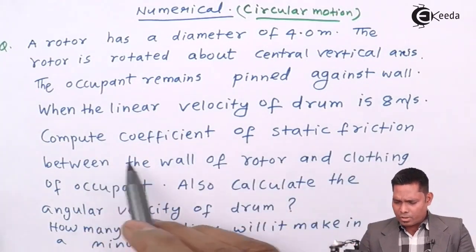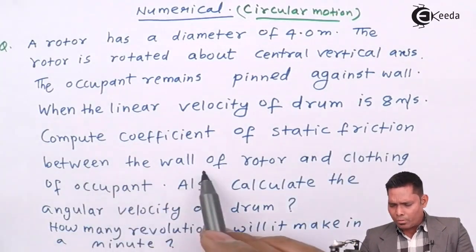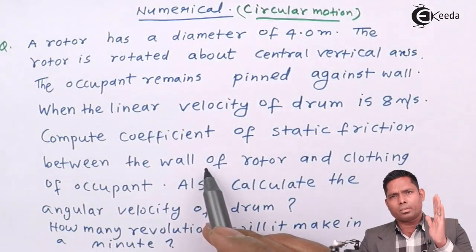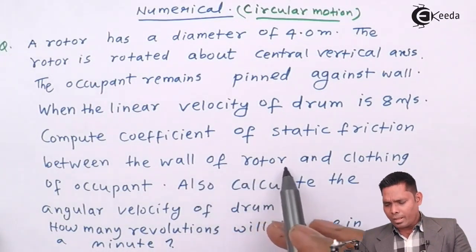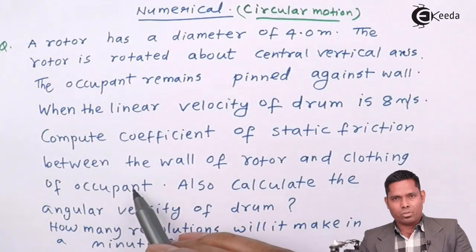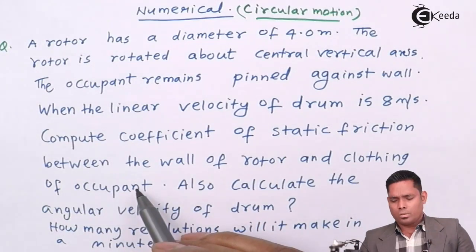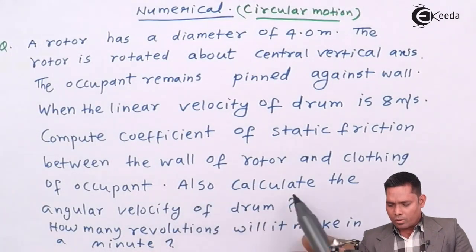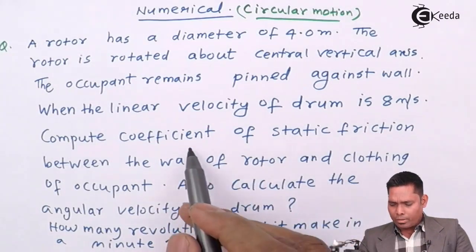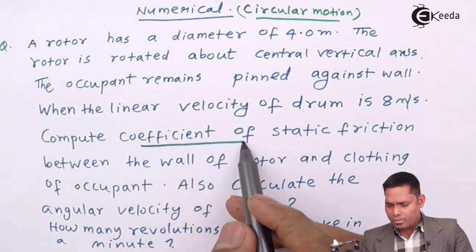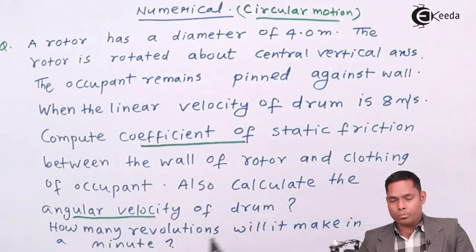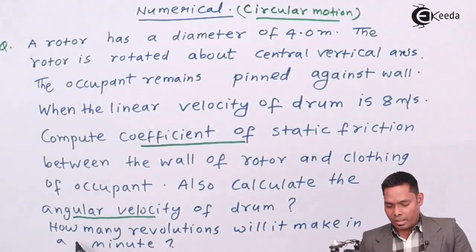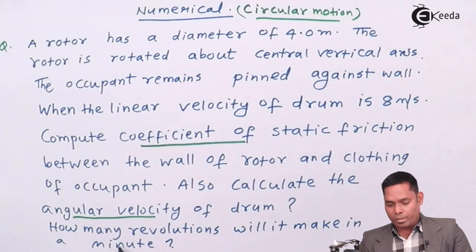Compute the coefficient of static friction between the wall. Why is the person not falling? Because there is friction between the wall of the rotor and the clothing of the occupant — the person's cloth and the wall. You also have to calculate the angular velocity of the drum and how many revolutions it should make in a minute.